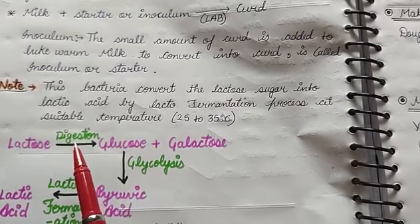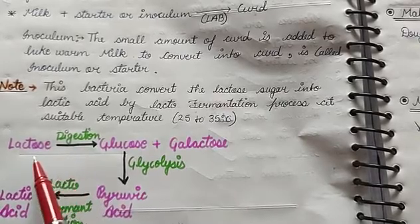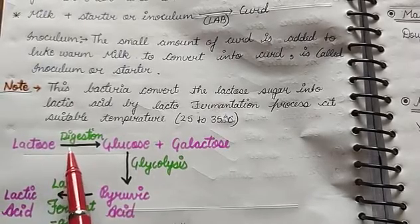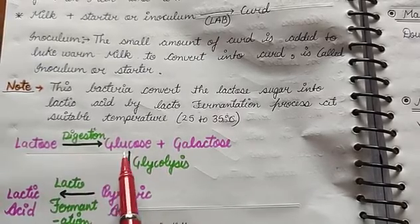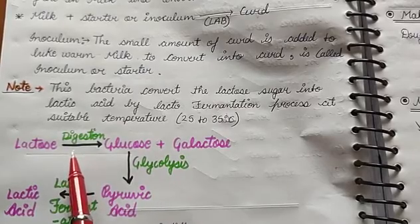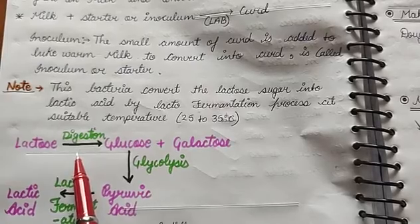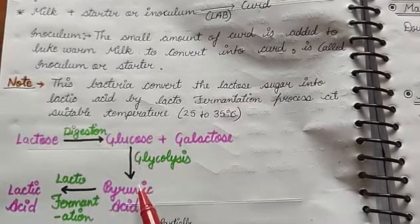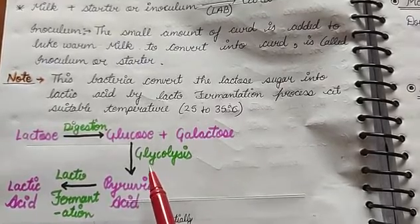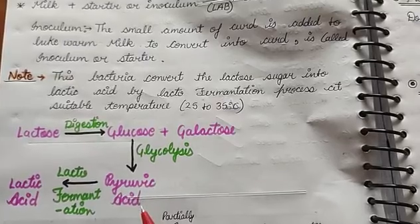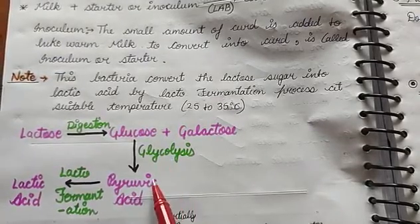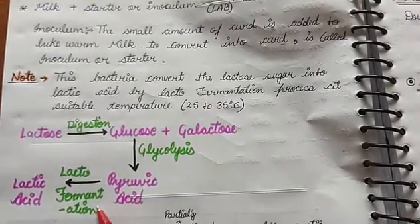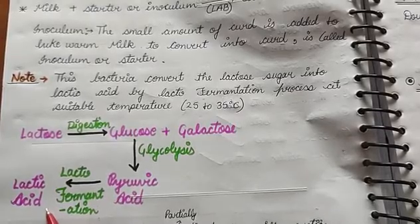Lactobacillus bacteria change the milk into curd as follows: lactose present in milk is digested by bacteria into glucose and galactose with the help of enzymes. When glucose is formed, it is used as food, and it first changes into pyruvic acid — this process is called glycolysis. The pyruvic acid then changes into lactic acid through the lacto-fermentation process, and this lactic acid causes the milk to change into curd.